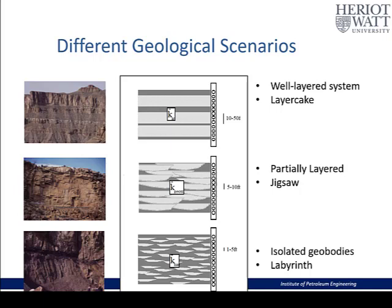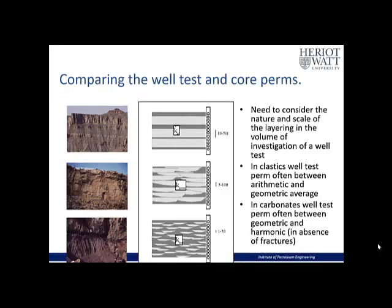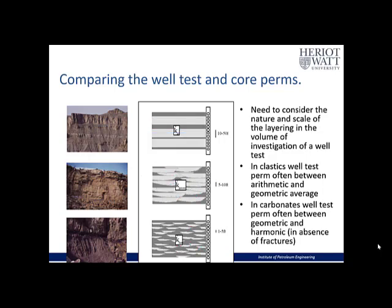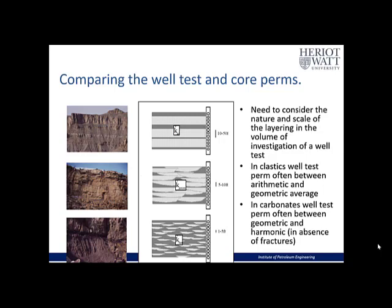In the case of a shale and channel sandstone reservoir with isolated sand bodies, the well would not show consistent long-term flow but would instead show depletion of the channels intersected — it's more of a labyrinth isolated reservoir. When comparing well tests and core permeabilities, we need to consider the nature and scale of layering within the volume of investigation. In clastic reservoirs the well test permeability often lies between the arithmetic and geometric average, while in carbonates — in the absence of fractures — it often lies between the geometric and harmonic average.